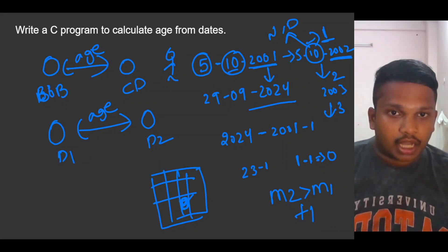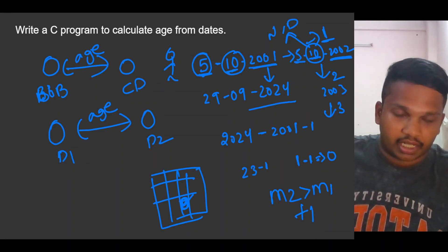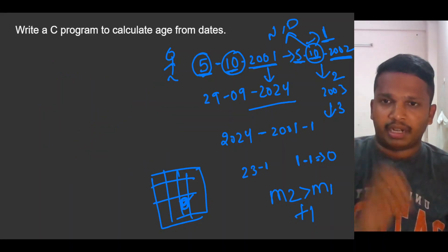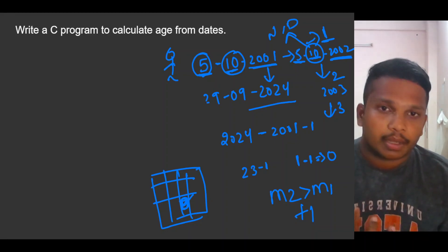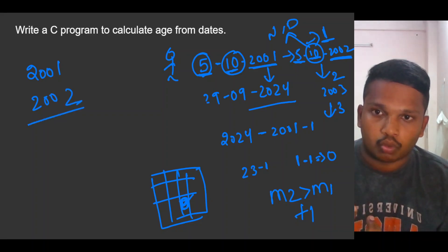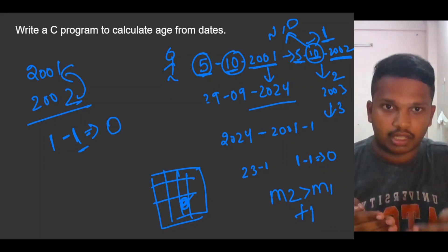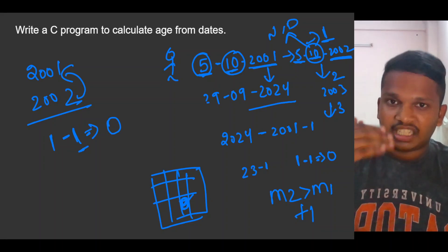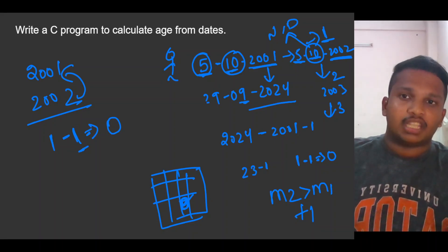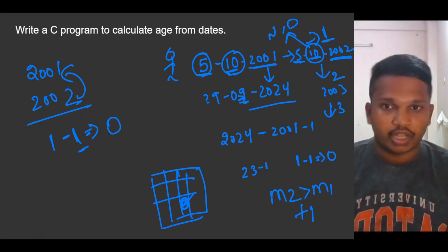What if both dates are in the same month? Then he must cross his birth date. Here, the current month is September (9), and he was born in October (10). How can he cross his birth date when even the month is not matching? So his age is zero only.